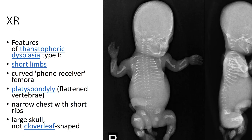On x-ray, we see features of thanatophoric dysplasia type 1: short limbs, curved phone-receiver femora, platyspondylae or flattened vertebrae, a narrow chest with short ribs, and a large skull — not cloverleaf shaped.